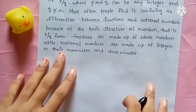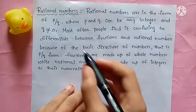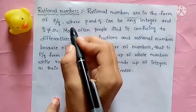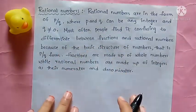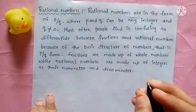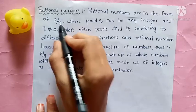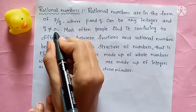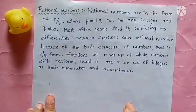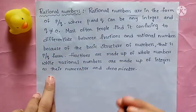Now let's learn about rational numbers. Rational numbers are in the form of P by Q, where P and Q can be any integers and Q is not equal to 0. The condition Q ≠ 0 exists because any number divided by 0 is undefined. So if Q equals 0, it is not called a rational number.